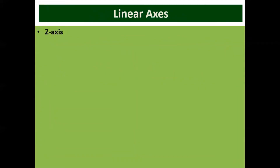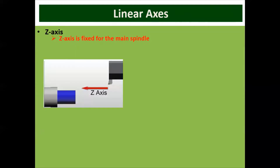The first axis is the Z axis. The Z axis is fixed for the main spindle. You can take any machine — whether a lathe machine, milling machine, or any type of CNC machine — Z will always be fixed for the main spindle. In the CNC lathe machine, the horizontal axis of the machine spindle is set as the Z axis. You can see the spindle, tool, and workpiece — it is clear that this is the Z axis, which is the longitudinal axis in this case.